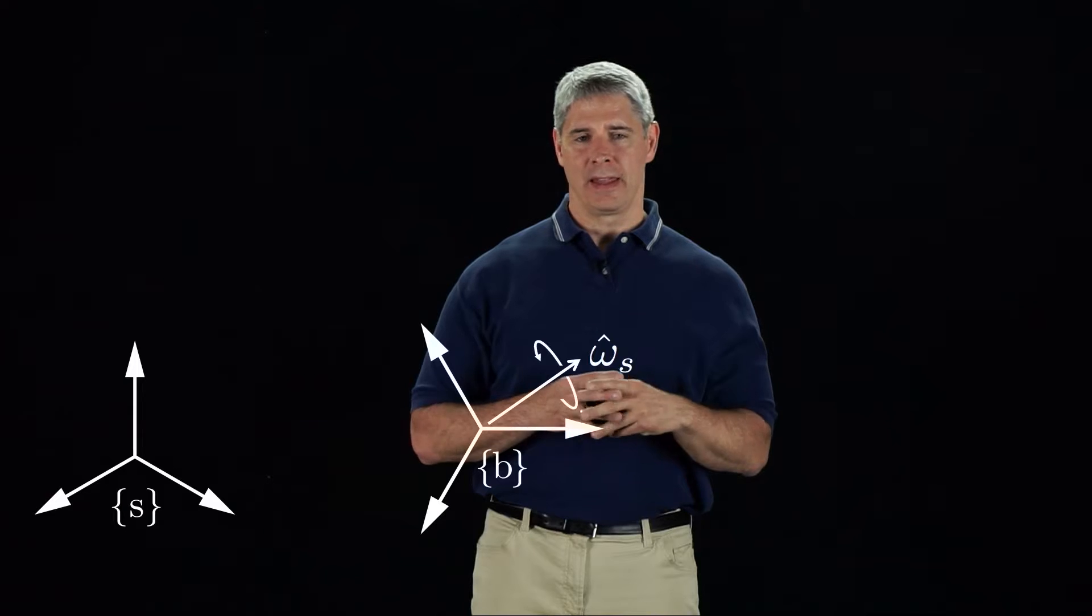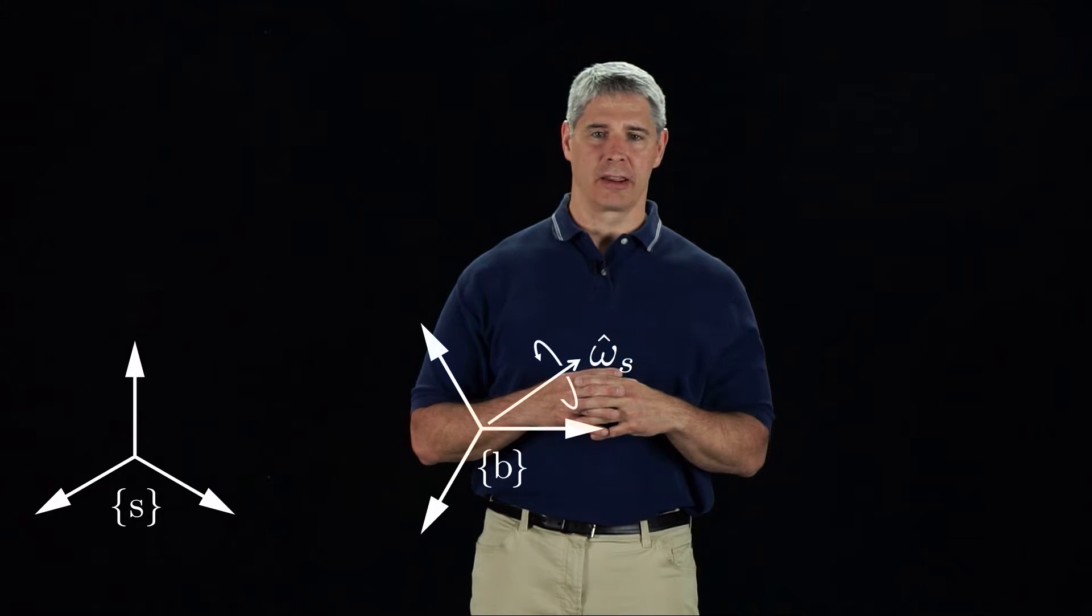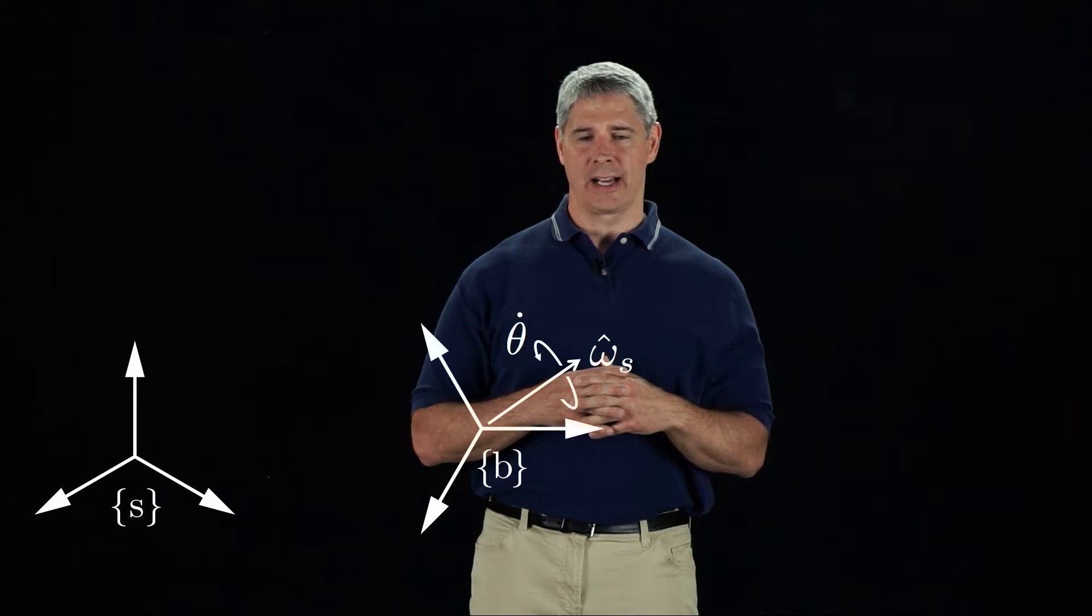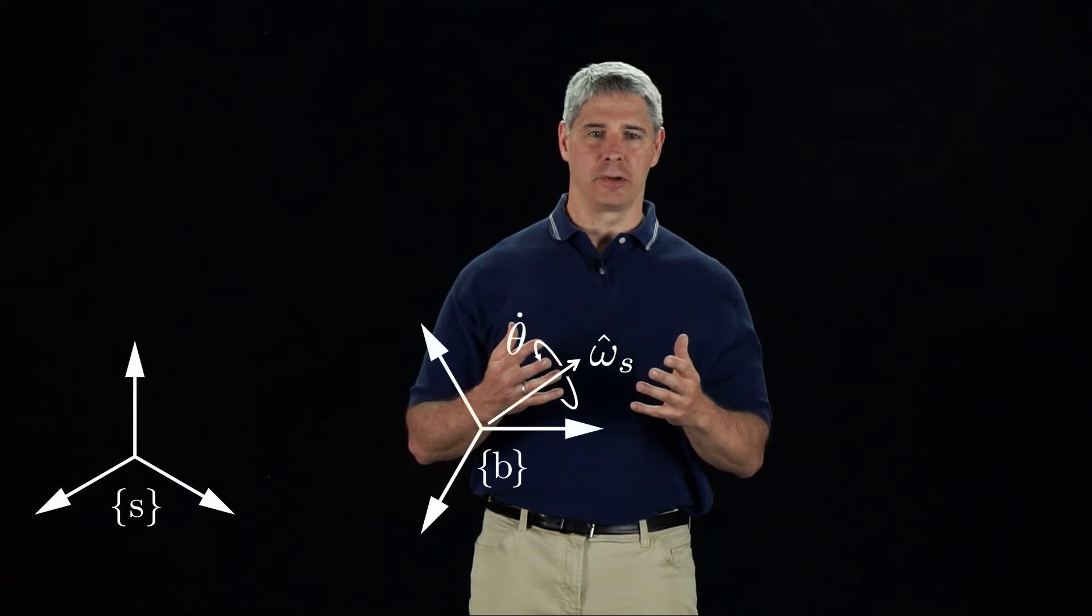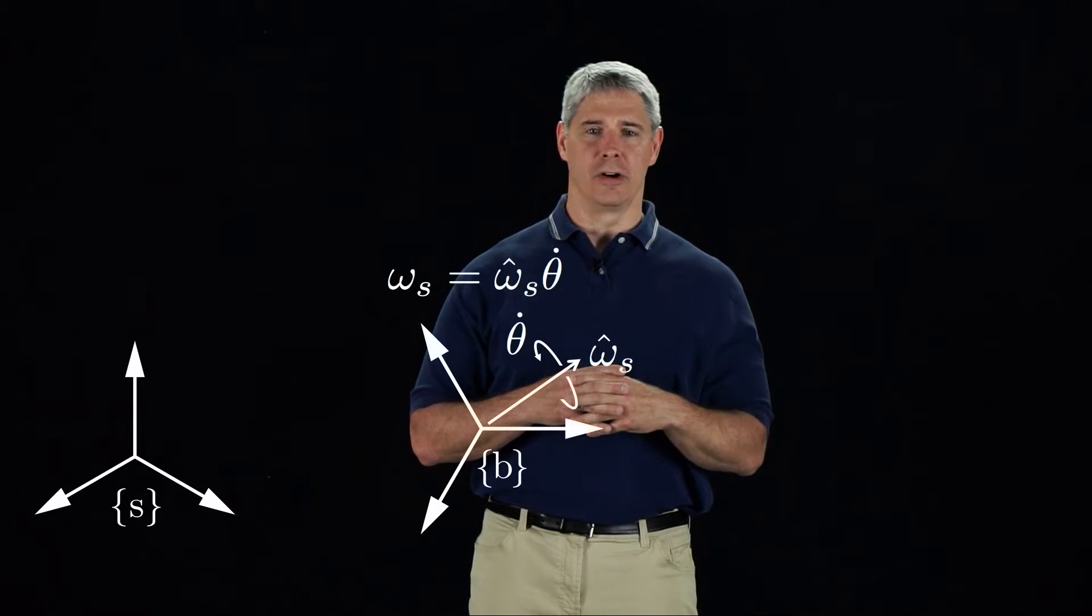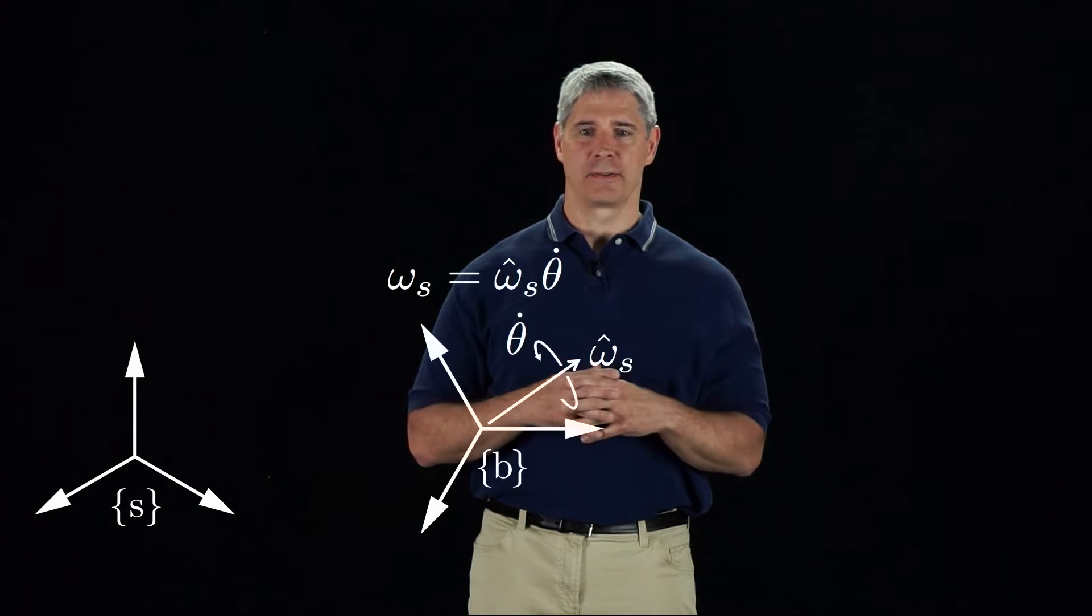We can express the axis as a unit vector in the S frame, writing it as omega hat S. The hat means that the vector has unit length. We call the rate of rotation theta dot, and we can multiply the unit axis omega hat S by the rate of rotation theta dot to get the angular velocity vector omega S, expressed in the S frame.